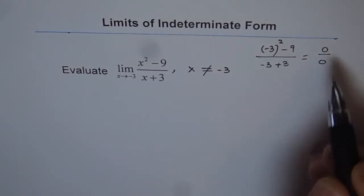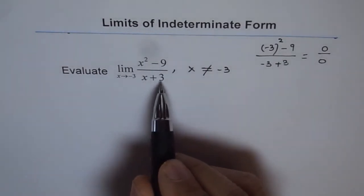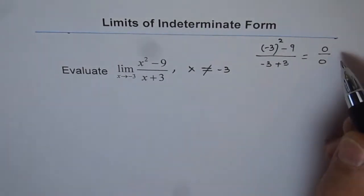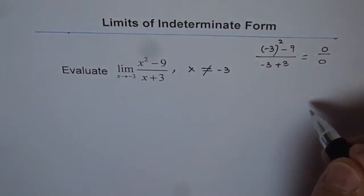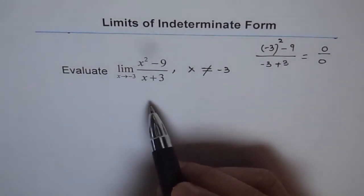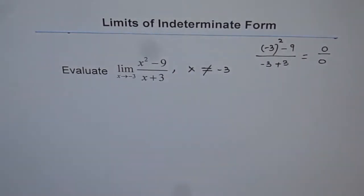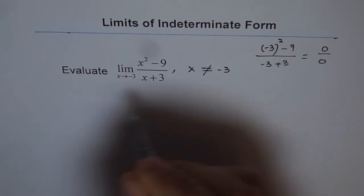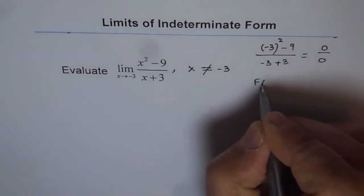In the denominator we have a factor x plus 3. Well, we have a factor x plus 3 also in the numerator. That is why the numerator is 0. So if we could isolate that factor, then we could easily find the limit. And that is the strategy which we are going to use to solve such problems. We will use a strategy called factoring.